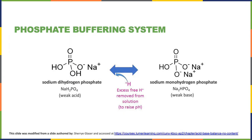The phosphate buffering system, resulting from sodium monohydrogen phosphate and sodium dihydrogen phosphate, is another important pH buffer in the blood. Sodium monohydrogen phosphate functions as a weak base to accept hydrogen ions from solution, preventing a decrease in blood pH.